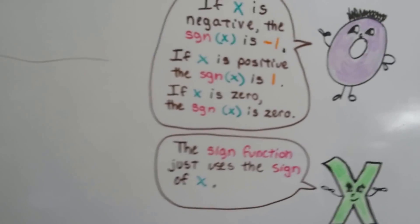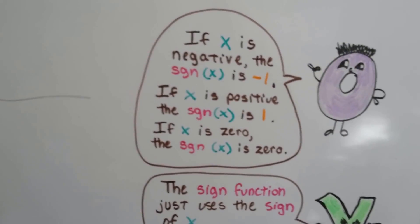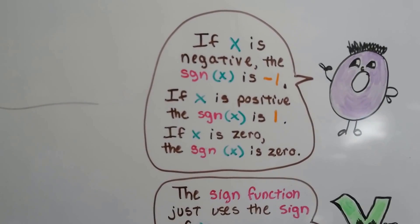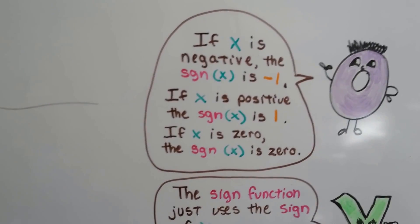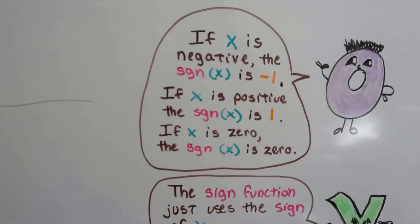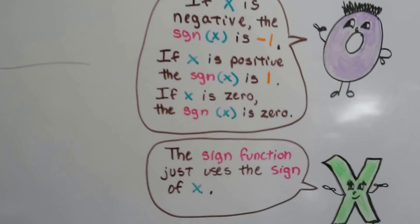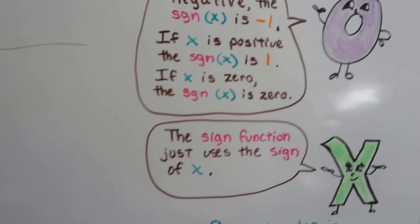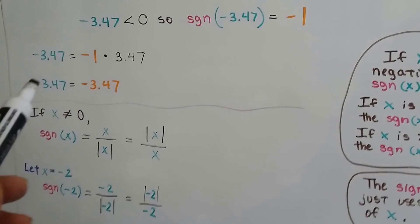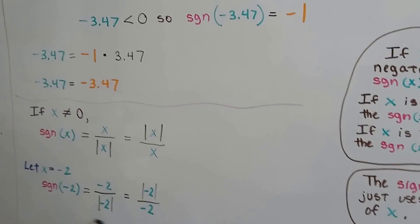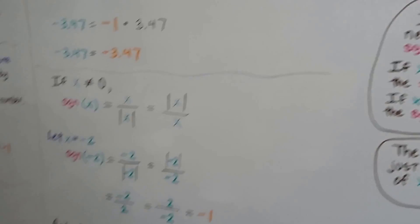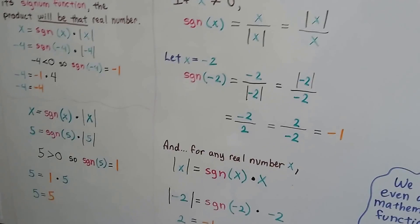Just remember: if x is negative, the sign function of x is negative one. If x is positive, the sign function of x is positive one. If x is zero, the sign function of x is zero. The sign function simply uses the sign of x — negative input gives negative one, positive input gives positive one.